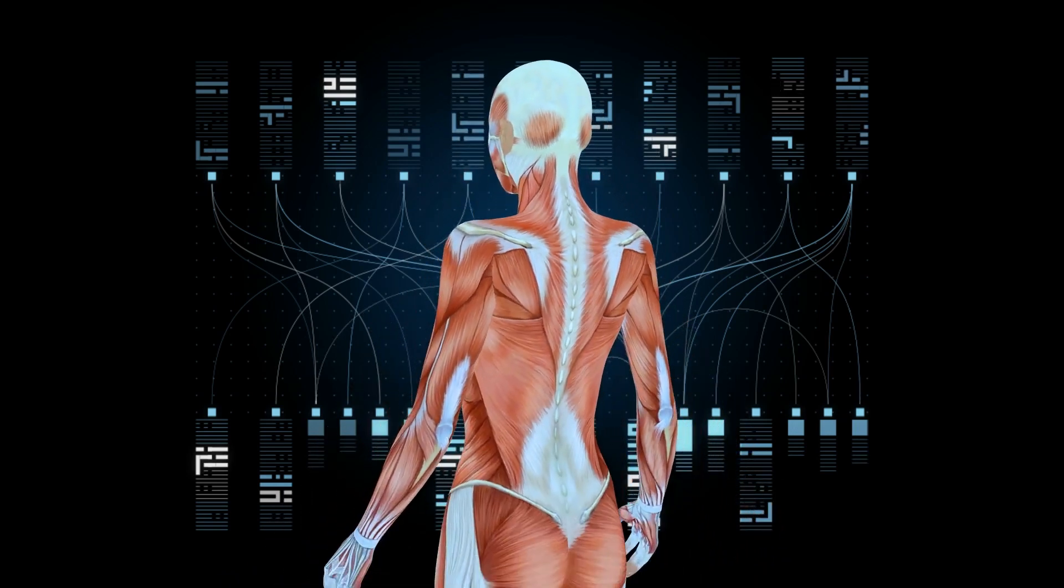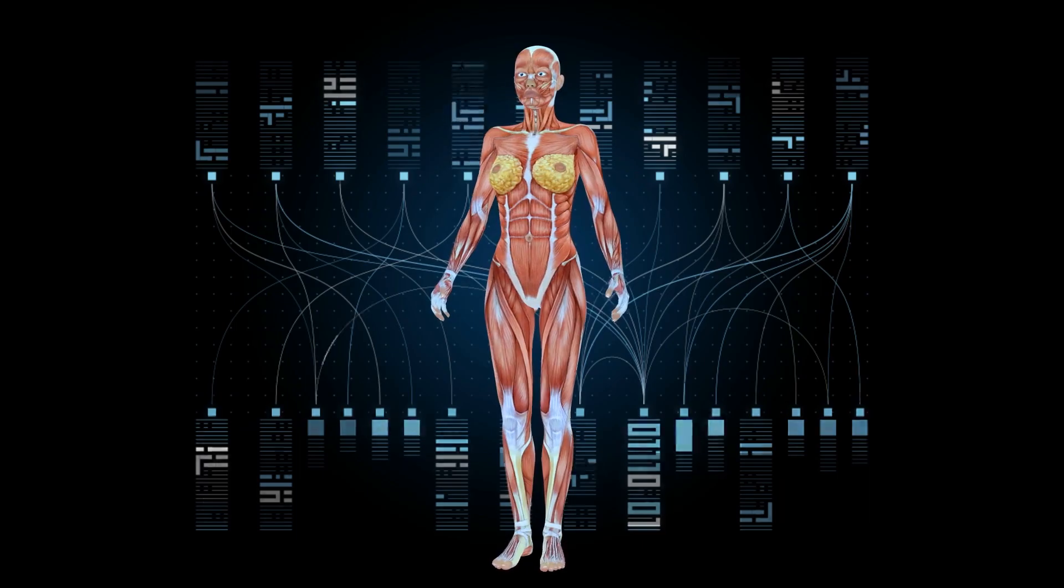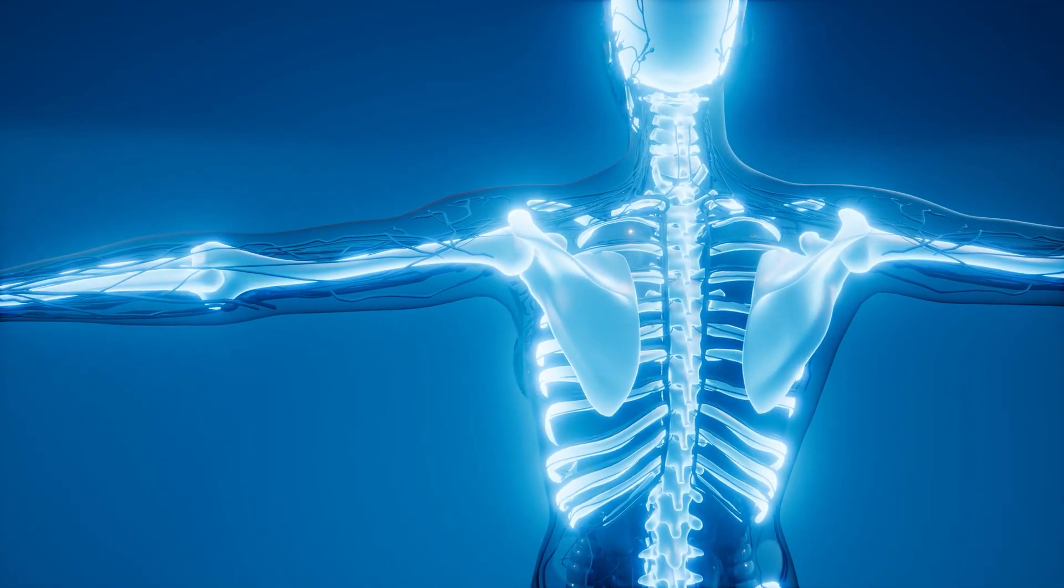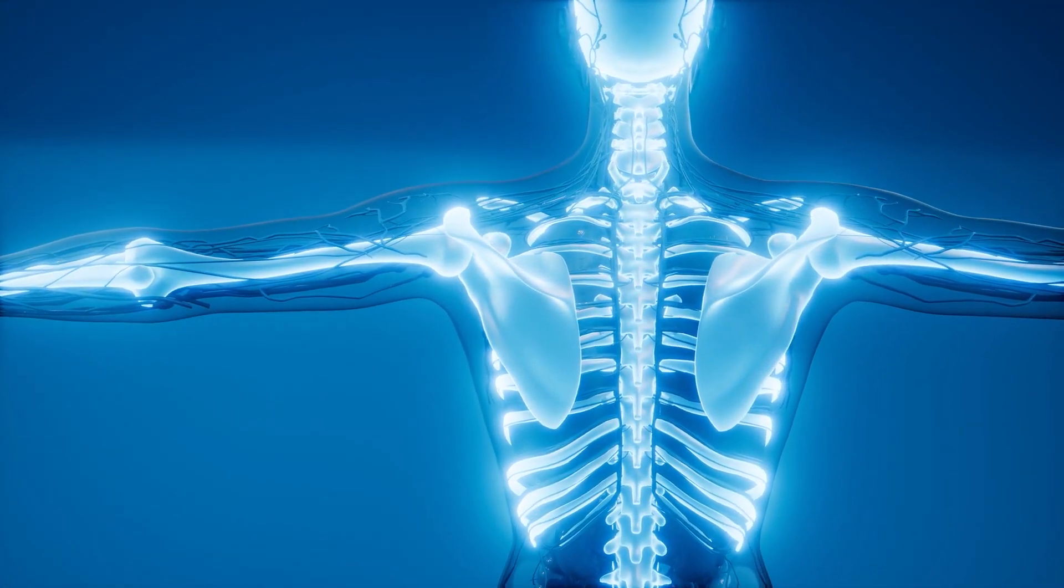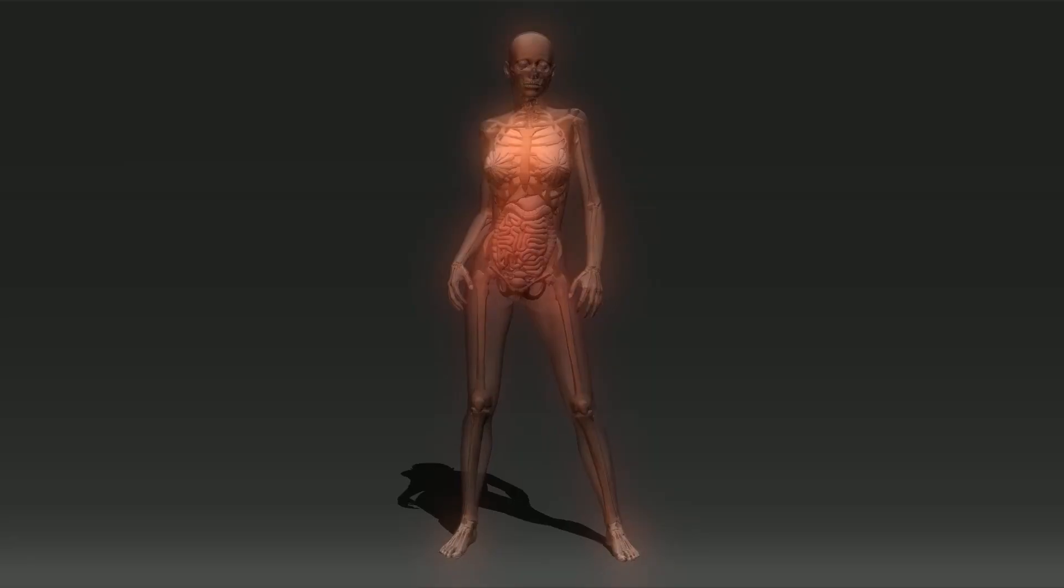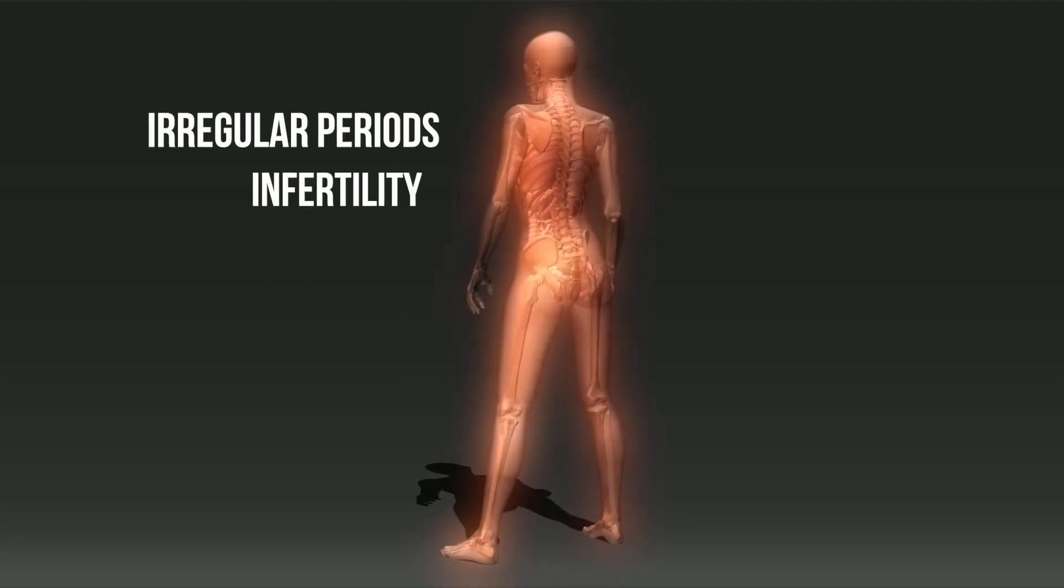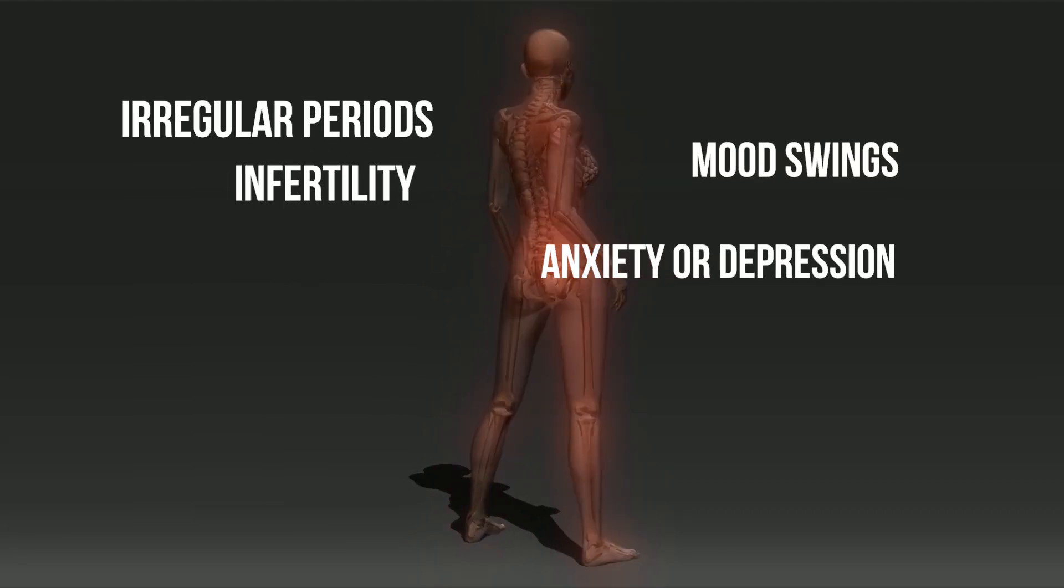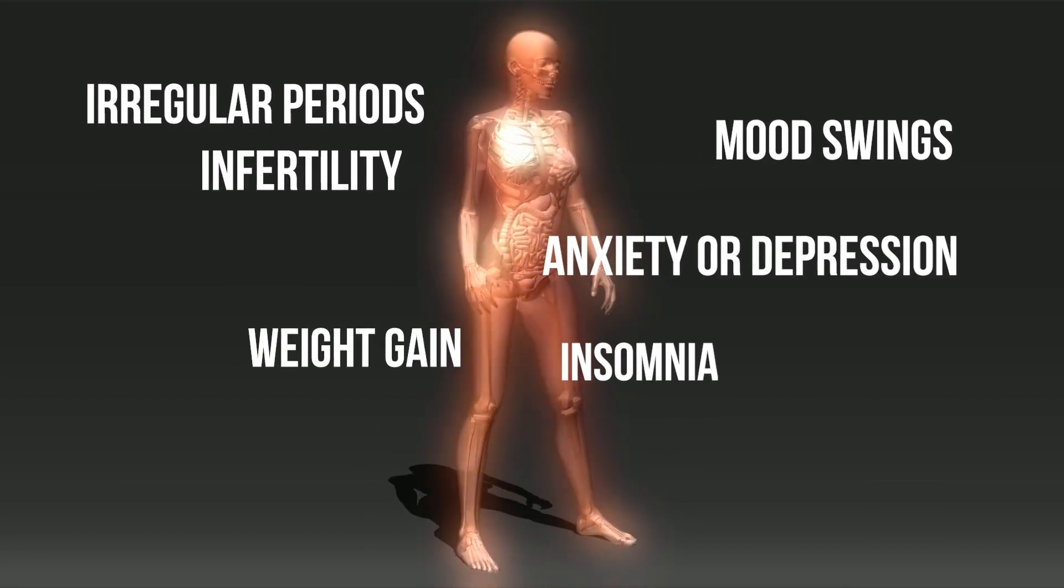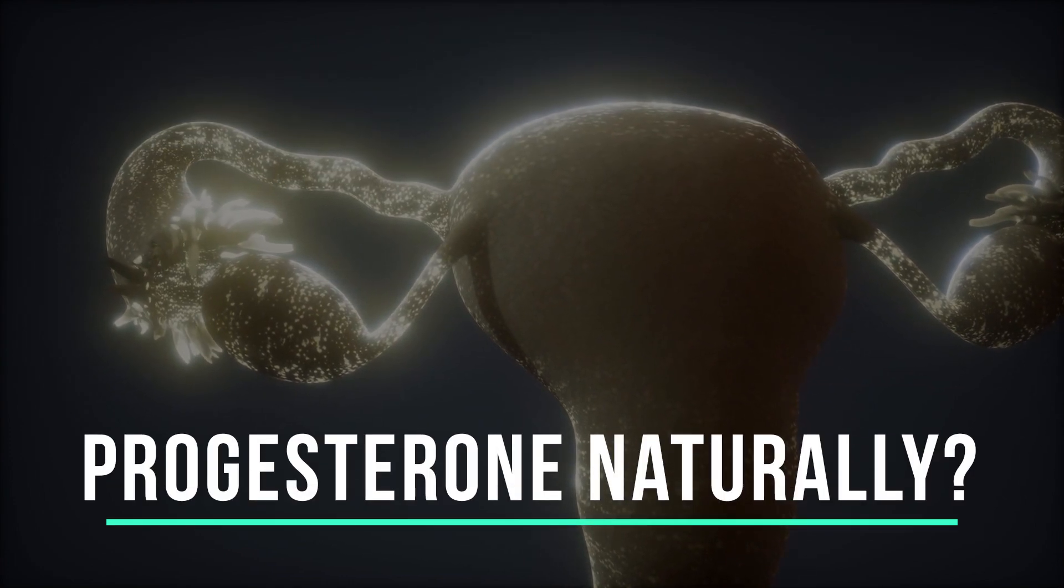It affects metabolism by increasing insulin sensitivity, which can help manage blood sugar levels. Progesterone also supports bone health by stimulating osteoblasts, cells that build new bone tissue. Low progesterone can lead to symptoms such as irregular periods or infertility, mood swings, anxiety or depression, weight gain, and insomnia. So here are the best ways to increase progesterone naturally.